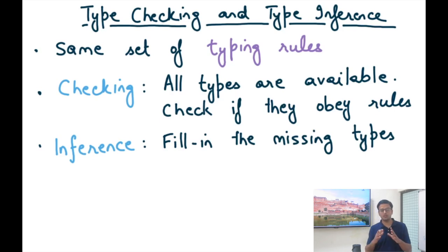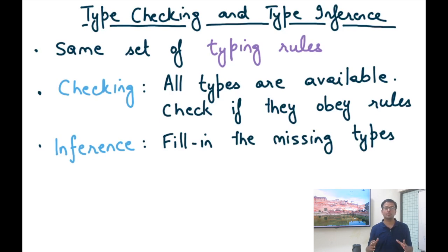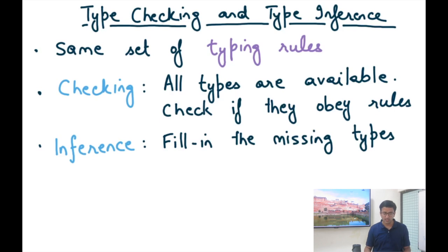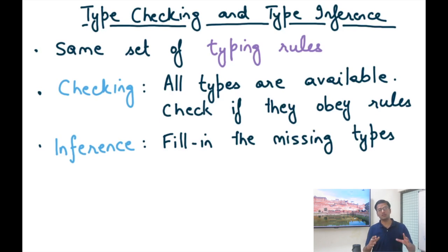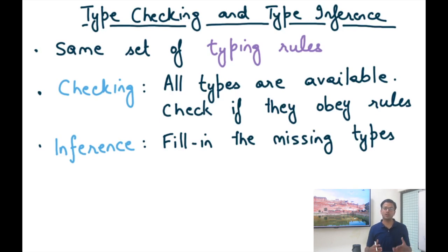Different languages have different designs with respect to type checking versus type inference. A language like C or C++ has many manually annotated types — you annotate the types of local variables, global variables, function arguments, function signatures, classes, etc. But for expressions like 1+2 or x+y, where x is an integer and y is a long, a set of typing rules identifies the type of x+y. Those expression types are not manually annotated but inferred — so even C has type inference.